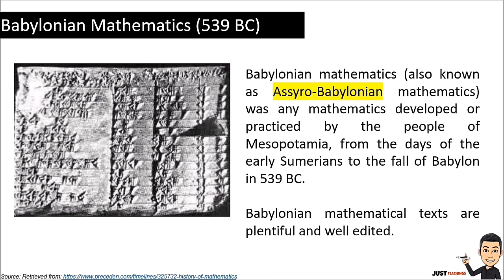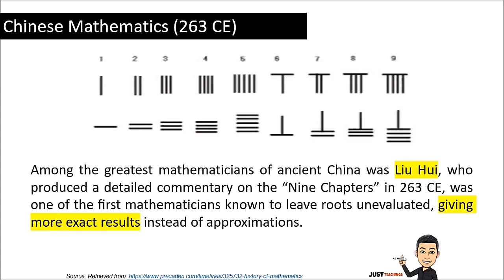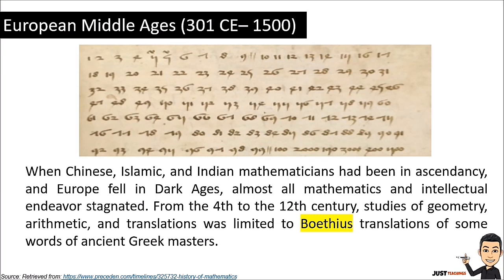Now let's go to Chinese mathematics from 263 CE. Among the greatest mathematicians of ancient China was Liu Hui, who produced a detailed commentary on the Nine Chapters in 263 CE. He was one of the first mathematicians known to leave roots unevaluated, giving more exact results instead of approximations.